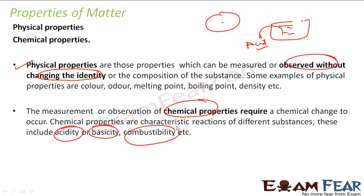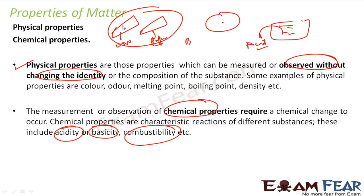If you want to find the combustibility of a material, you have to actually burn it. For example, there are two different materials — wood and paper — and you want to find which one is more combustible. You have to actually burn it; without burning, you won't be able to find out. So to find a chemical property, the particular object or matter has to go through a chemical change.